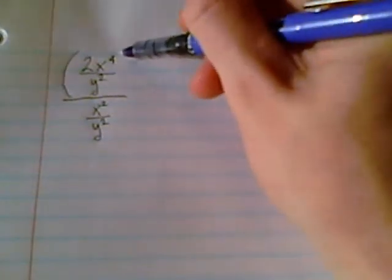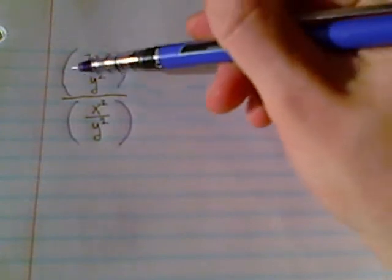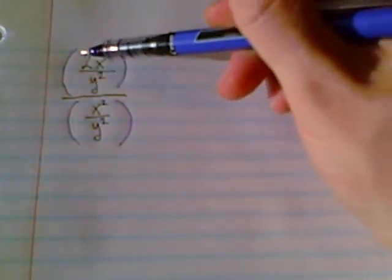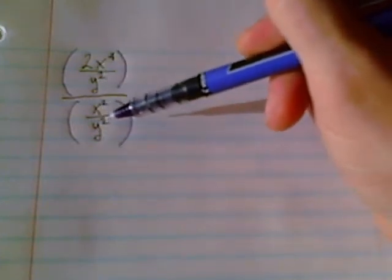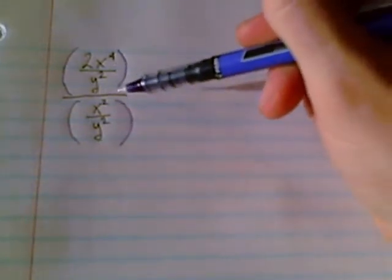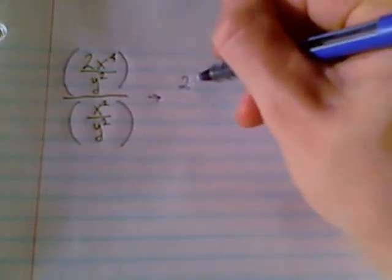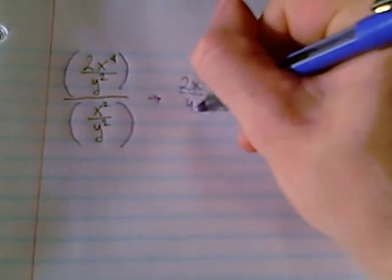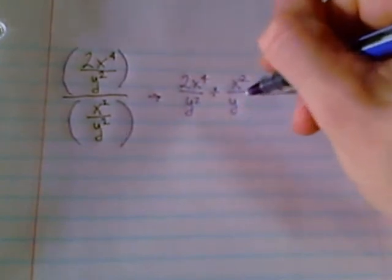This is our next example for complex fractions. Now remember, the way we started off, parentheses around the entire numerator and around the entire denominator. And what we're looking for is, do we have more than one fraction that we need to combine with an add or a subtract? In this case, we don't. Not in the numerator and not in the denominator either. What that means is, if you think back to that numerical problem, we're at that point where we're right at the end of the problem and we're ready to write this as a division. This is ready for 2x to the 4th over y squared divided by x squared over y squared.